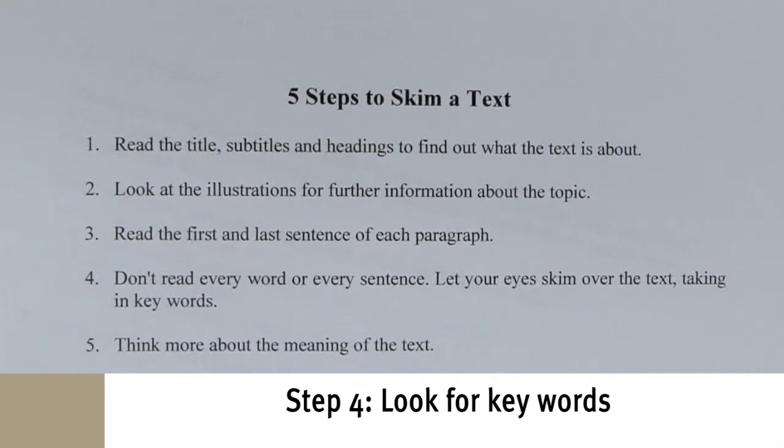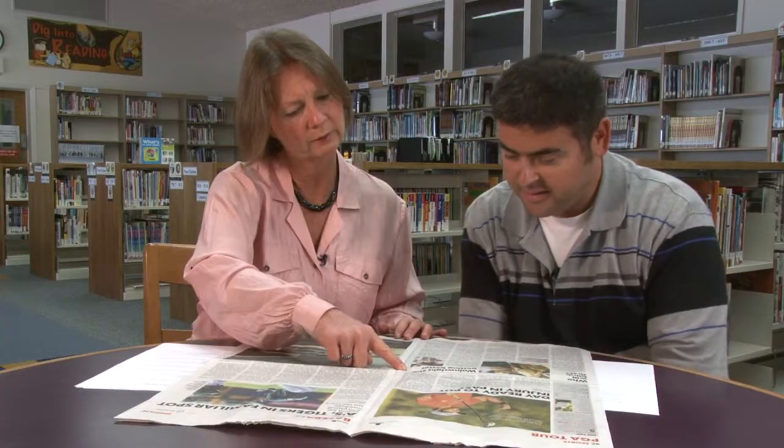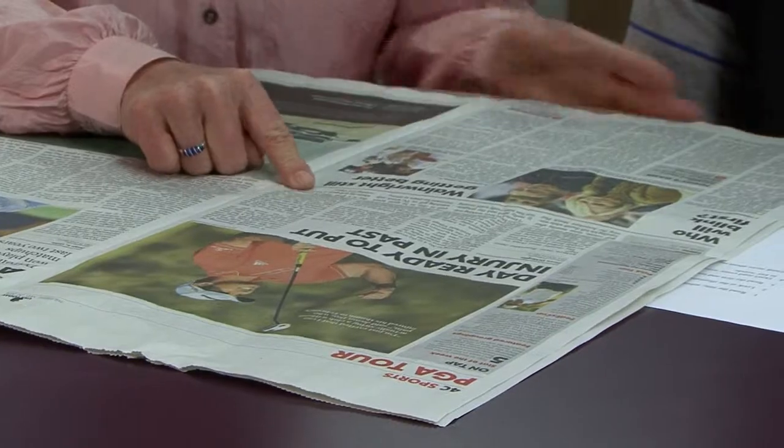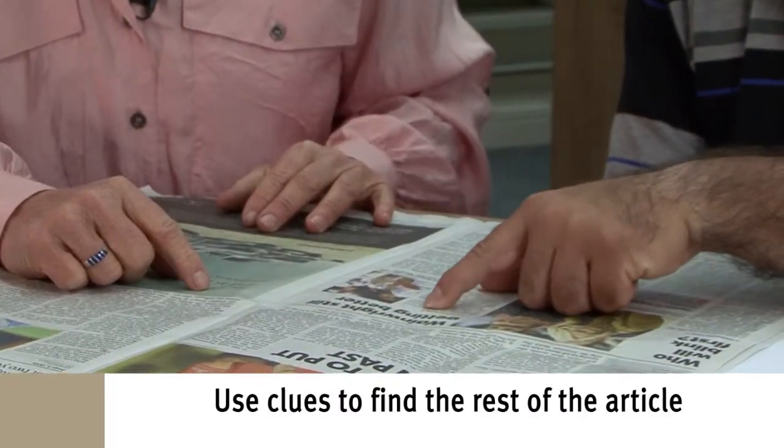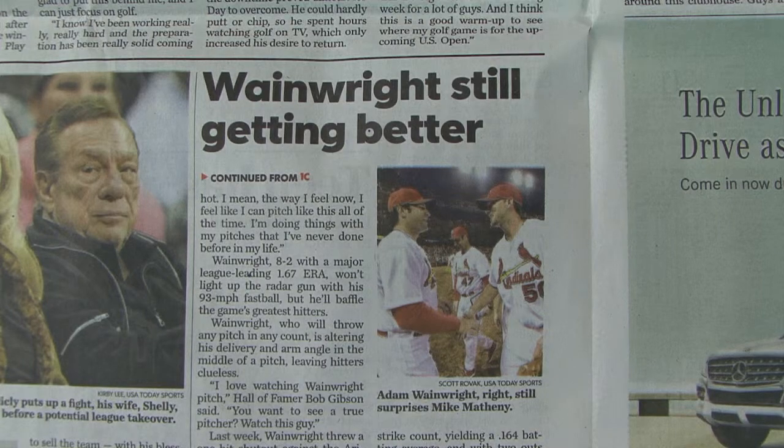Step four: don't read every word or every sentence — let your eyes skim over the text, taking in the key words. Key words are the important words that catch your eyes — names, for example. The story continues on 4C, and the continuation is titled 'Wainwright's Still Getting Better.' We know it's the continuation because it says 'continued from 1C' and the story is still about Wainwright.